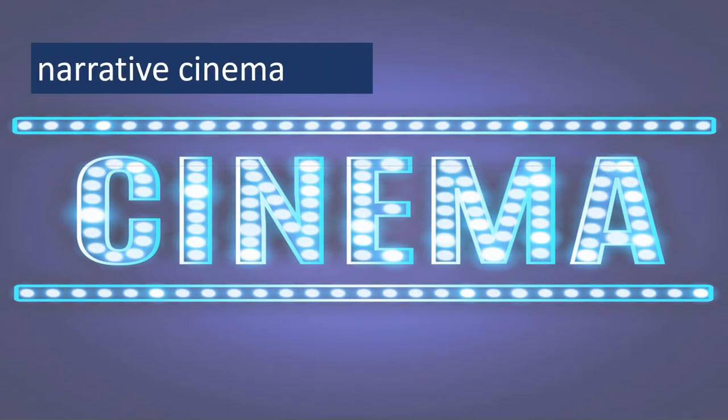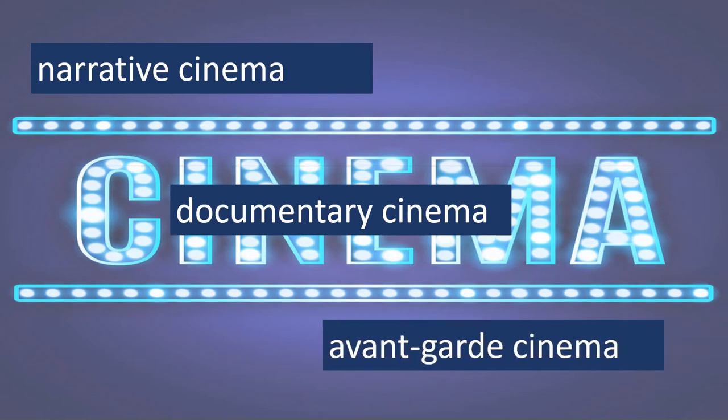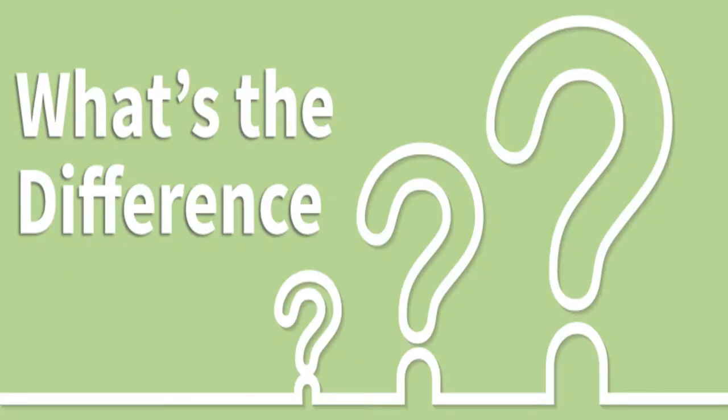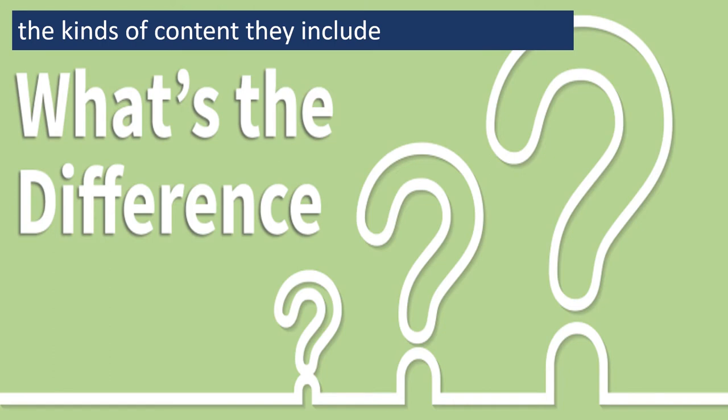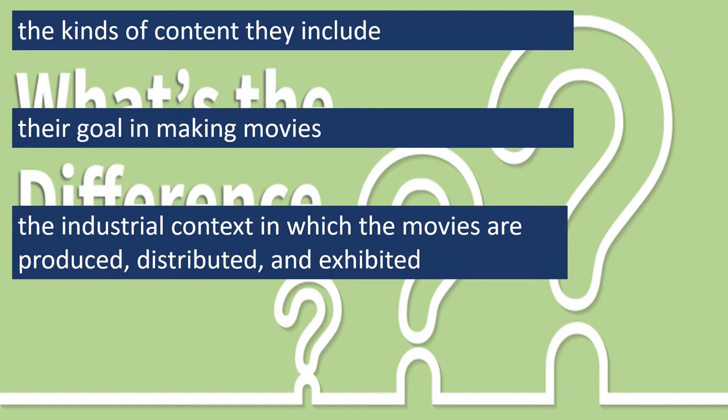The three modes of cinema are narrative cinema, which produces narrative films; documentary cinema, which produces documentary films; and avant-garde or experimental cinema, which produces avant-garde films. The things that characterize and differentiate these modes are the kinds of content they include, their goal in making movies, and the industrial context in which the movies are produced, distributed, and exhibited.